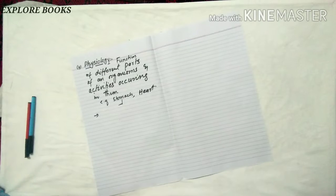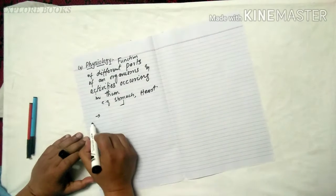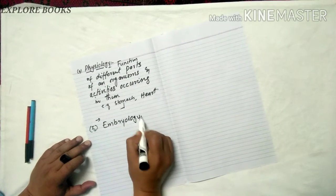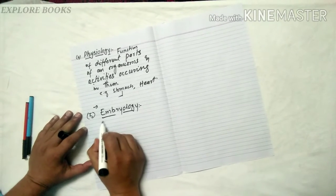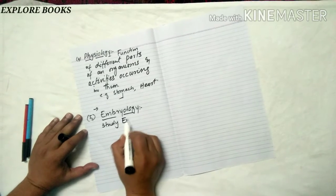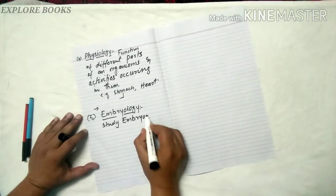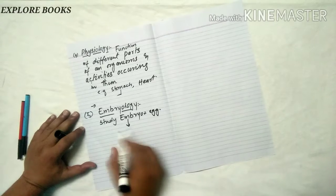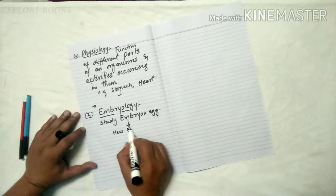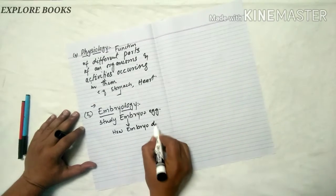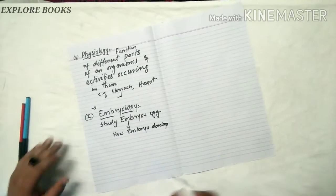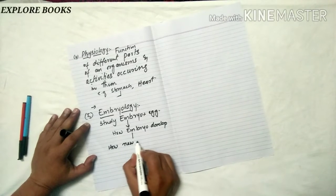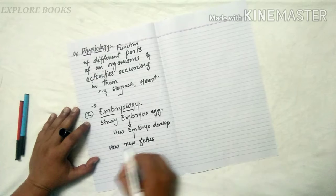Number five is embryology. Embryology is the study of embryo. Embryo means egg. How embryo develops in human or an animal.